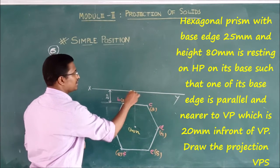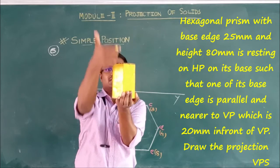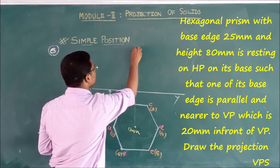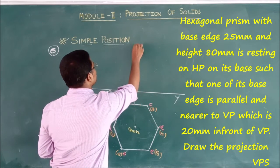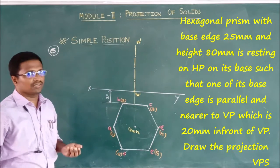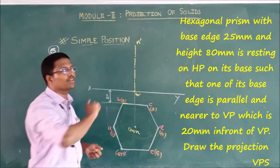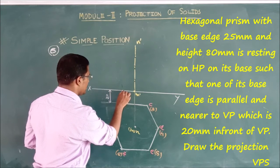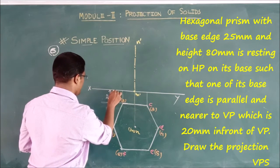The axis line is the height. It is resting on its base on HP. The height is 80mm. The axis line represents the height of the hexagonal prism, which is 80mm as given in the question.